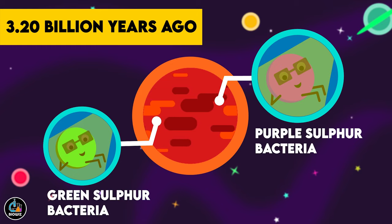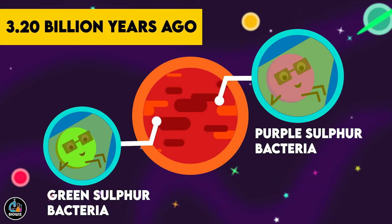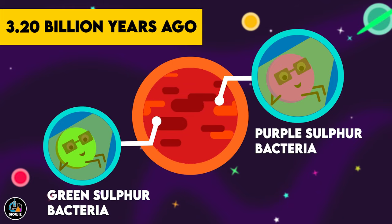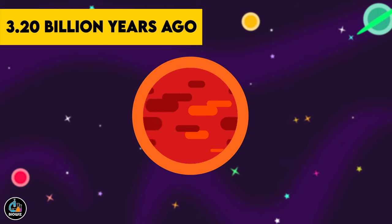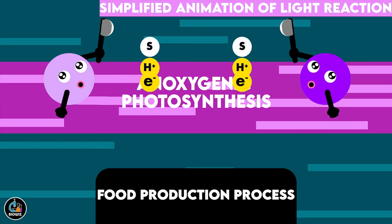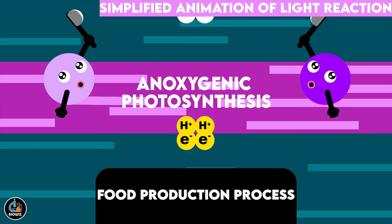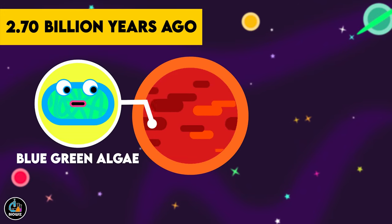These organisms were similar to the modern-day purple and green sulphur bacteria and used to perform anoxygenic photosynthesis. The source of electrons and protons here was mainly hydrogen sulphide. But things started to change after the origin of blue-green algae, as the mode of photosynthesis performed by them was slightly different.